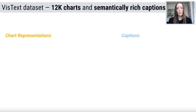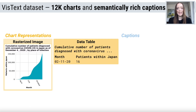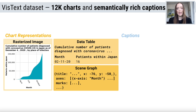In VizText, we represent each chart as its image, its underlying data table, and its charting language specification, which is known as a scene graph. This allows VizText to support multimodal chart captioning systems. Multiple modalities may improve chart captioning performance since these three representations contain complementary information, and it enables deployed chart captioning models that can take in a user's chart in any format.